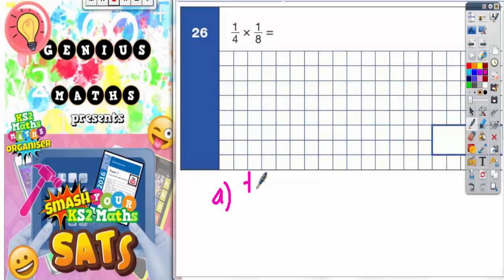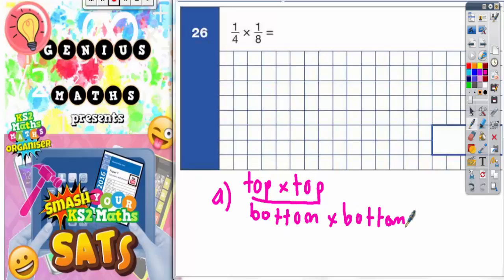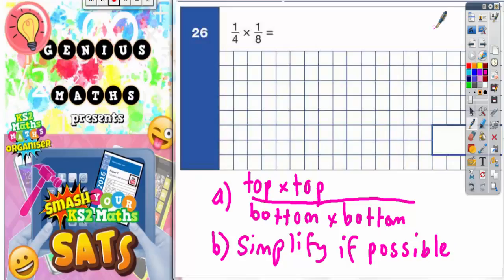So step A is to do the top times the top and then the bottom times the bottom. And then step B is to simplify the fraction if possible. Now if we always follow those steps this will be easy.